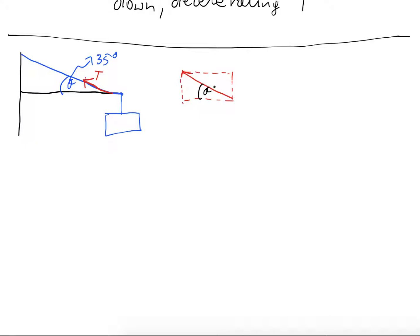I can break the tension T into two component forces. The angle is theta, giving a vertical component T sinθ acting perpendicular to the support, and a horizontal component T cosθ acting along the support — opposite, adjacent, and hypotenuse. When a force acts diagonally, I break it into two perpendicular components using sine and cosine.